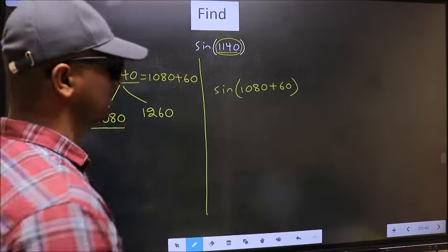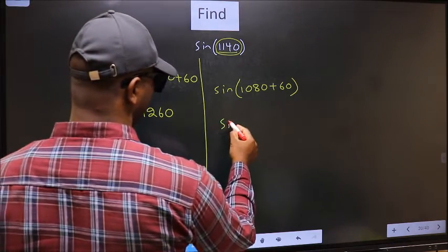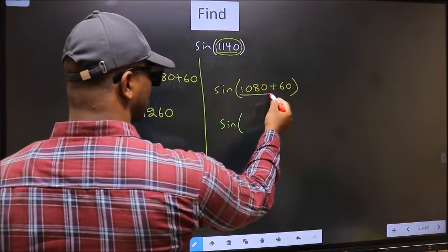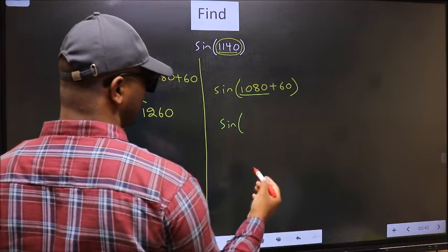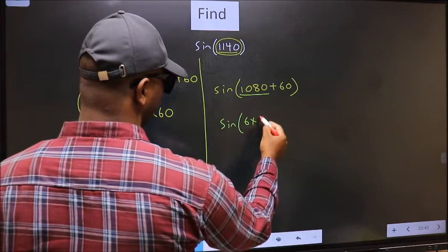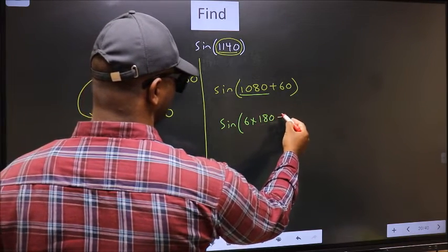Next, sin. In place of this, now we should write 6 x 180 plus 60.